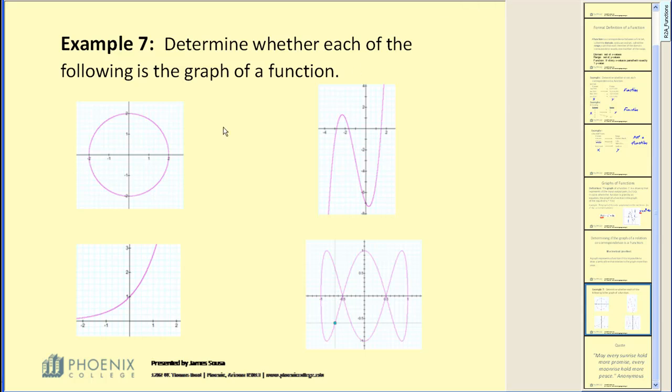Is it impossible to draw a vertical line through this graph that crosses it more than once? And the answer is no. There's an example of where it crosses twice. This fails the function test. It's not a function. So we'll say no.